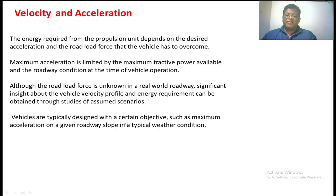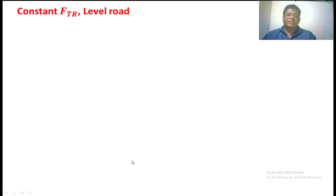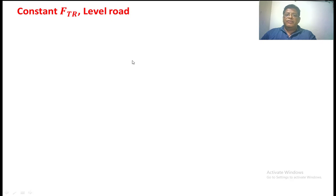Vehicles are typically designed with a certain objective such as maximum acceleration on a given road slope under typical weather conditions. Here, there are two phases we are analysing for the electric vehicle. In each phase we find how much distance is travelled and how much time is taken by the electric vehicle. The first phase is the normal road condition — level road and constant tractive force. We consider two cases: the initial condition at t=0, and the second case where t is greater than 0.